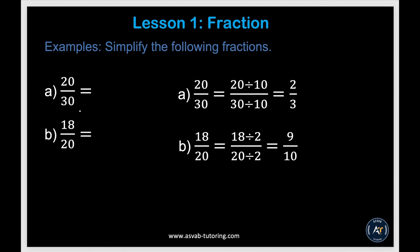The first thing we'll learn is how to simplify fractions. To simplify a fraction, you need to find a number you can divide both the top and bottom by. For example, with 20 over 30, we can divide both by 10, giving us 2 thirds. Similarly, 18 over 20 divided by 2 on both sides gives you 9 over 10.